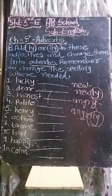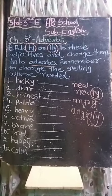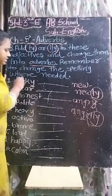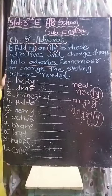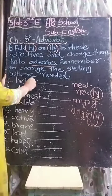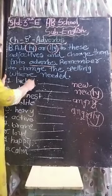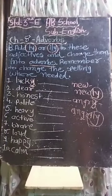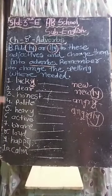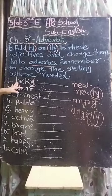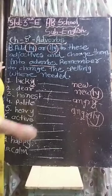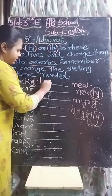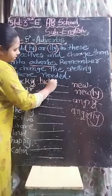Now see, first one: 'lucky'. यहाँ पर last letter Y है, तो Y को निकाल देना है और L-U-C-K-I-L-Y लिखना है — 'luckily'.